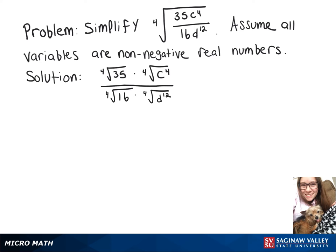Now, we know that the fourth root of c to the fourth is c because we just divide that exponent by 4, and we still have our fourth root of 35.